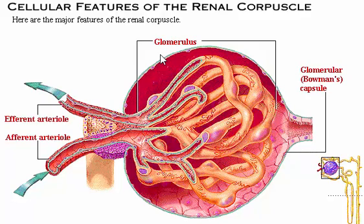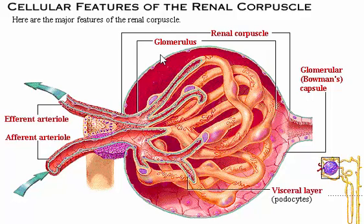Together, these structures are called the renal corpuscle. The visceral layer of the glomerular capsule is made up of specialized cells called podocytes, which surround the permeable capillaries. Between the visceral and parietal layers of the capsule lies the capsular space, which collects the fluid and solutes being filtered from the blood.